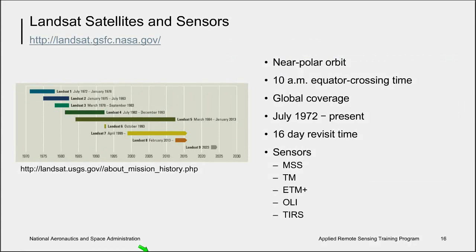The Landsat satellites have been collecting Earth observations since July 1972. The revisit rate is every 16 days, and spatial resolution is typically 30 meters. Despite the relatively long revisit rate, Landsat is still a useful imaging system for applied science questions including marsh subsidence and the effects of eutrophication in inland waters. There is a commitment to continue with the Landsat program as it has been so successful in tracking land use and land change, and more recently with the launch of Landsat 8 with its broader use for aquatic systems.